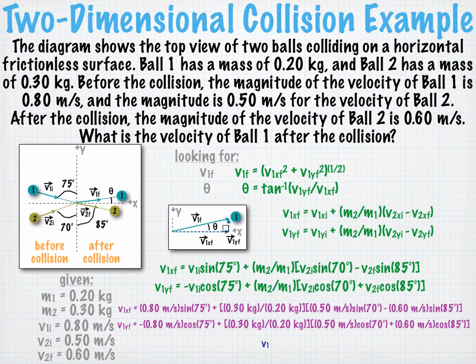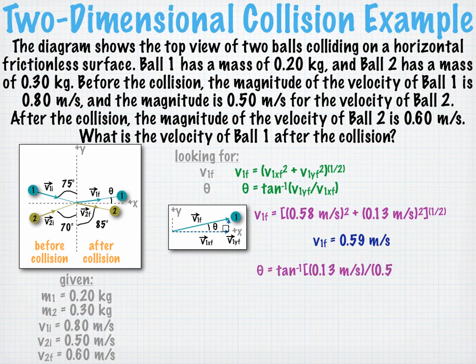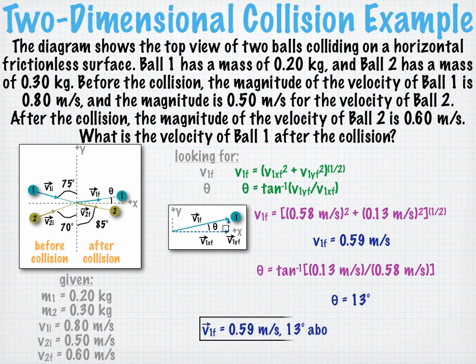Using our calculator, we get values for v1x final and v1y final. We can now plug these values into our final equations — first for v1 final, and using our calculator we get a magnitude of 0.59 meters per second. Now we'll plug in values to find theta, and using our calculator we get 13 degrees. So our complete answer for the final velocity of ball one is 0.59 meters per second, 13 degrees above right.